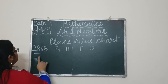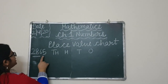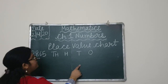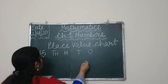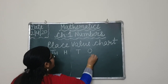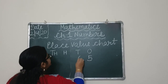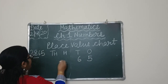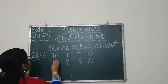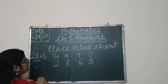For example, we are taking the number 2, 8, 6, 5. How to write this number in the place value chart? We write 5 in the ones place, 6 in the tens place, 8 in the hundreds place, and 2 in the thousands place.